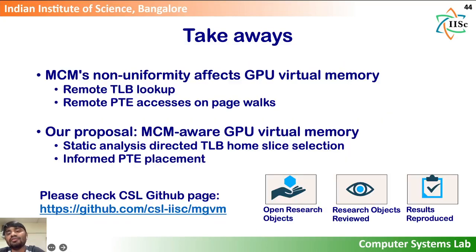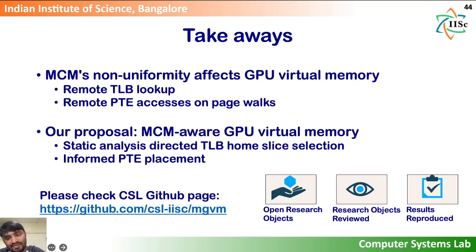In conclusion, MCM non-uniformity affects GPU virtual memory in two key ways: one, remote TLB lookups affect TLB lookup latency, and two, remote PTE accesses increase the pagewalk latency. In response, we propose MGVM, which leverages static analysis directed TLB home slice selection to reduce remote TLB lookups and informed PTE placement to reduce remote PTE accesses. Our code and simulation infrastructure are available publicly — please check our lab's GitHub page for additional scripts. Thank you.